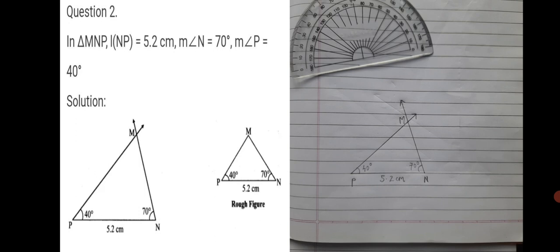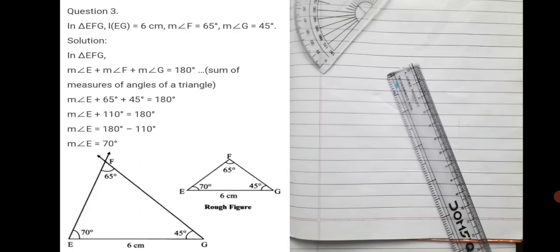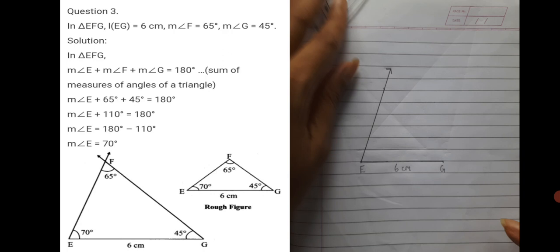As mentioned, the 70 degree angle could be towards the left and 40 towards the right depending on how you choose to orient the triangle. Question number 3: in triangle EFG, EG is equal to 6 centimeter, angle F is equal to 65 degree, and angle G is equal to 45 degree. Seg EG will be taken as the base of 6 centimeter since only one side is given — it is compulsory to take it as the base.